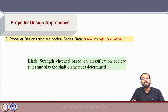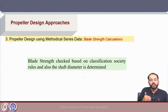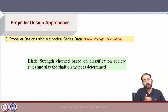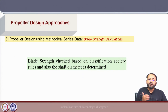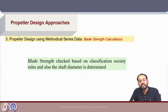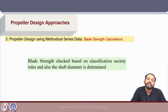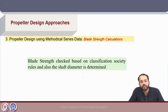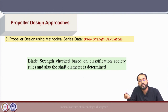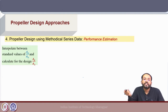Next, the blade strength needs to be checked. The design process integrates everything learned: calculation of thrust, torque, and efficiency from the open water diagram; cavitation; and blade strength — all used to get a final propeller design corresponding to optimum efficiency while satisfying cavitation and strength requirements. Blade strength is checked based on classification society rules for minimum thickness required for different blade sections, and the shaft diameter is also determined. Finally, performance estimation is done.